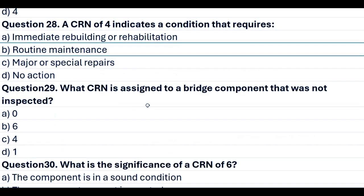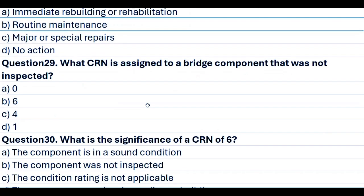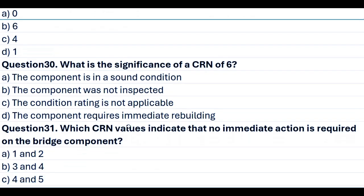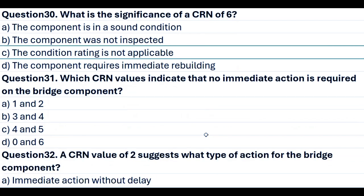Question 29. What CRN is assigned to a bridge component that was not inspected? A. 0. B. 6. C. 4. D. 1. Answer A. 0. Question 30. What is the significance of a CRN of 6? A. The component is in a sound condition. B. The component was not inspected. C. The condition rating is not applicable. D. The component requires immediate rebuilding. Answer C. The condition rating is not applicable.